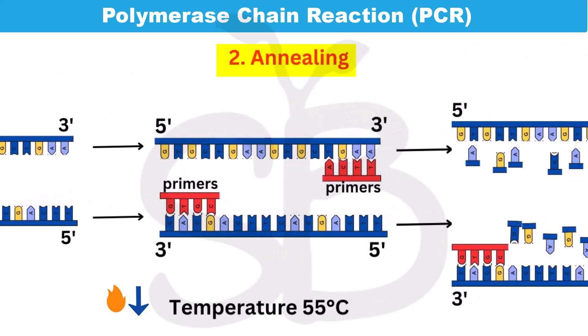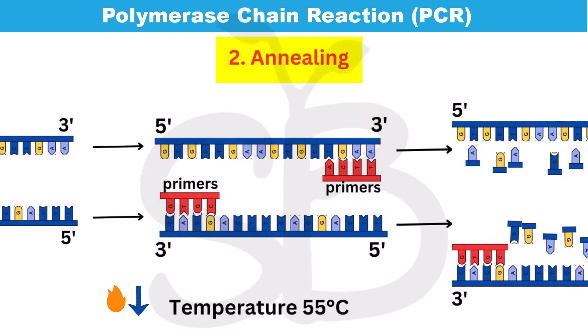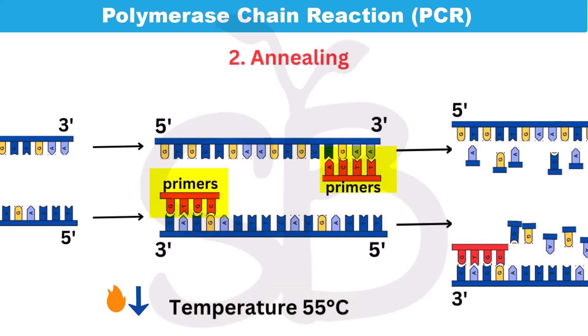Annealing is the second step. In this step, the temperature is lowered so that the primers can hybridize to the complementary regions of the single-stranded DNA template. The template strand is hybridized with the primers — this joining process is called annealing. The next process is extension.